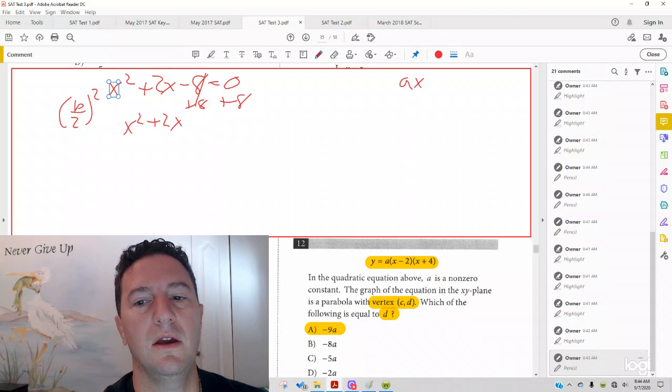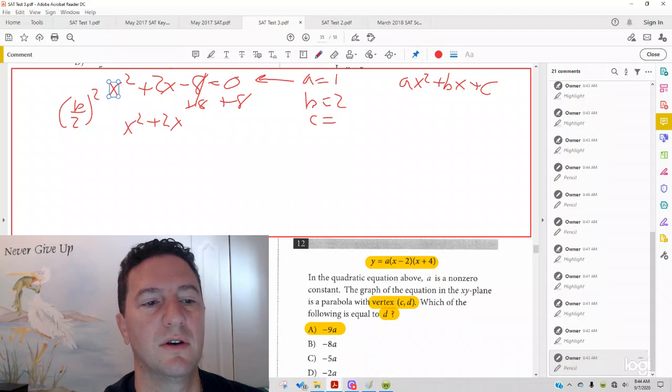So what's my b here? Well, if I have the form ax squared plus bx plus c, you can see here in this equation that my a equals 1, my b equals 2, my c equals...that's what we're finding here. So if we put our b over 2, that's 2 over 2, which is 1 squared, which is 1. I put plus 1.